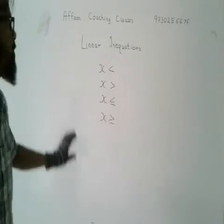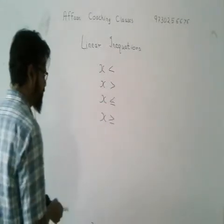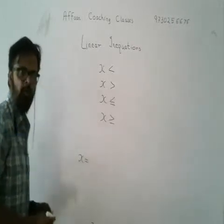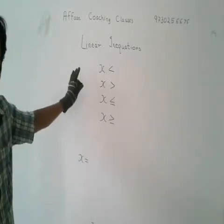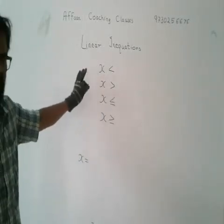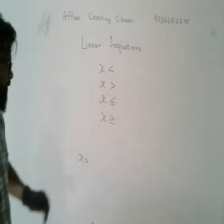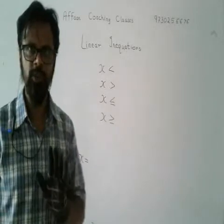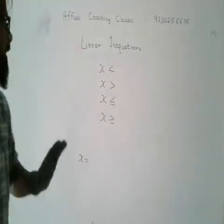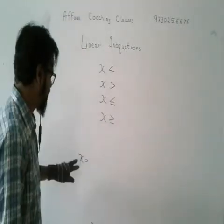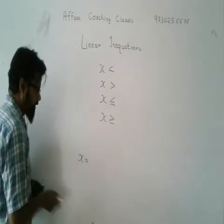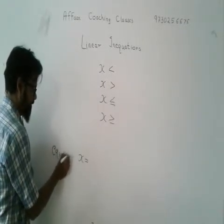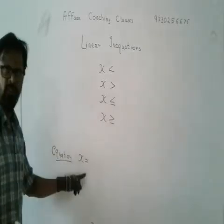In linear equations, you will have an equal to sign, and you will get the exact value of x. But in linear inequations, you will have inequality signs — greater than, less than, greater than or equal to, or less than or equal to. The main difference is about this sign.